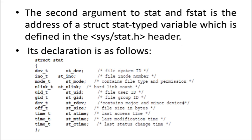The second argument to STAT and FSTAT is the address of a struct stat typed variable. It is a stat variable in the form of a structure. Structures can store different types of data in a single place. The details of this stat variable are defined in the sys/stat.h header. Its declaration contains different types of attributes related to a file. If you execute the STAT or FSTAT prototype, all these attributes can be retrieved for a particular file.